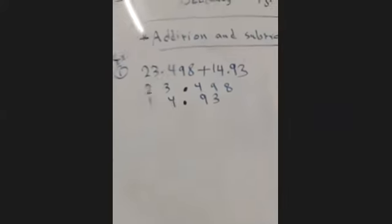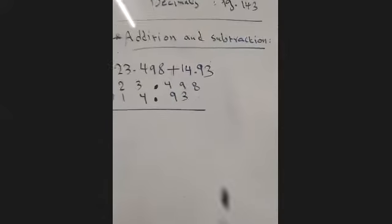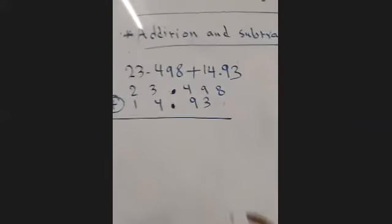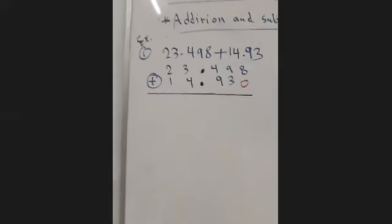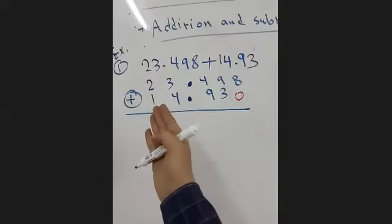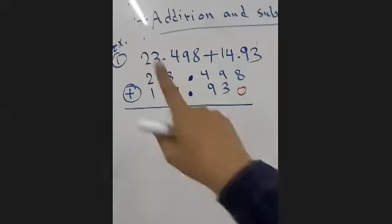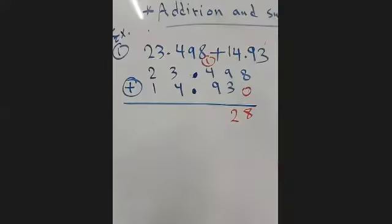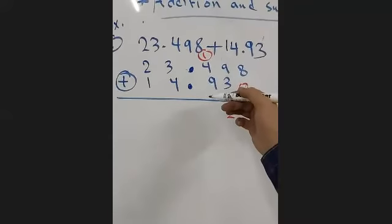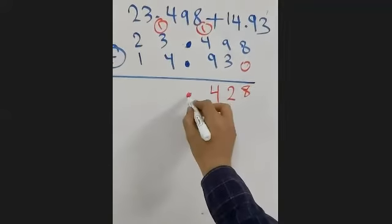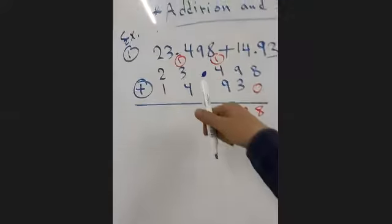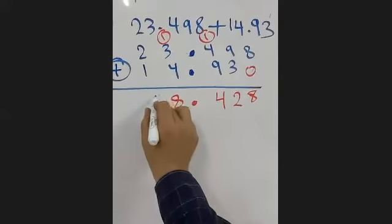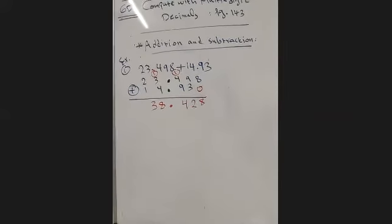Now add normally. In the empty space, we fill with zero. Starting from the right: 8 plus 0 is 8. 9 plus 3 is 12 — write 2, carry 1. 1 plus 4 plus 9 is 14 — write 4, carry 1. The decimal comes down in the same place. Then 1 plus 3 is 4, 4 plus 4 is 8, 2 plus 1 is 3. The answer is 38.428.